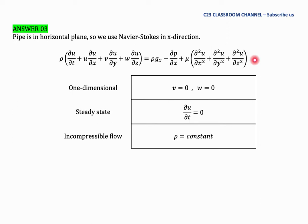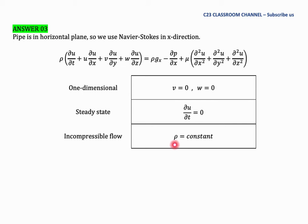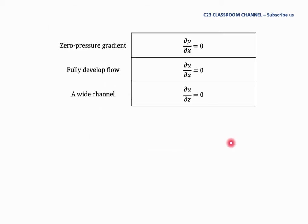We make several assumptions to simplify the Navier-Stokes equation. First, we treat this as one-dimensional flow, so v and w equal zero since there is no motion in the y and z directions. Second, the flow is steady state, so du/dt equals zero. Third, as stated in the question, it is incompressible flow, so density ρ is constant. Fourth, zero pressure gradient means ∂p/∂x equals zero.